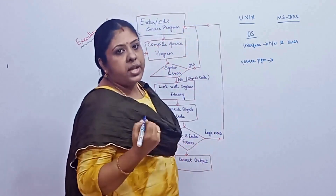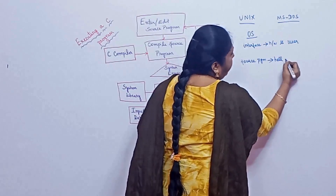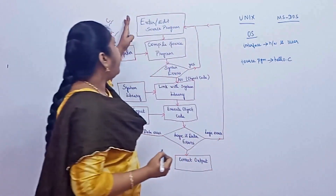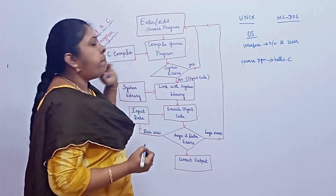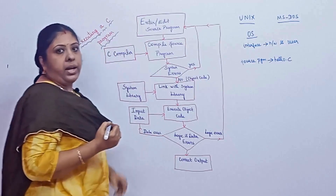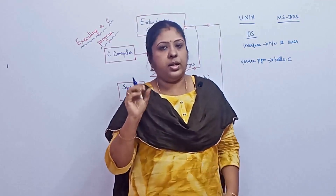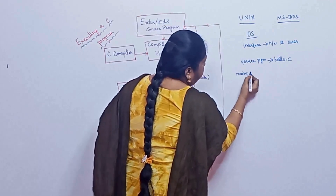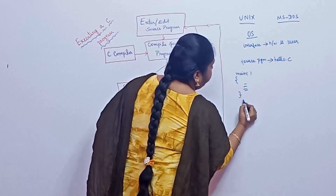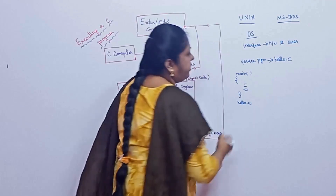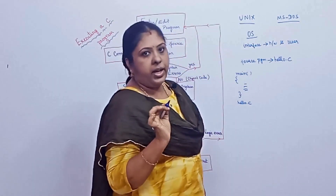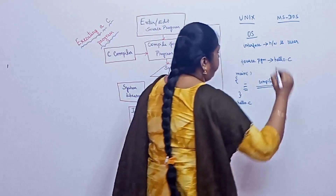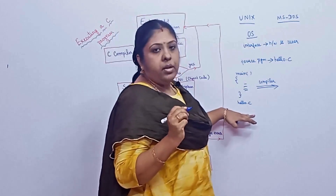After writing the source program, it has to be saved with the .c extension — for example, hello.c. Now after entering the source program, we have to compile it using the C compiler. We want to know about the purpose of the compiler — what does the compiler do. For example, this is hello.c, which is the source program we have written.